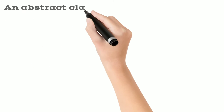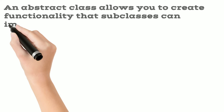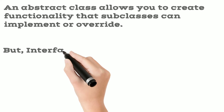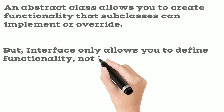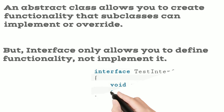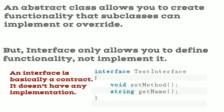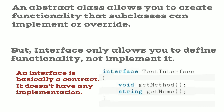An abstract class allows you to create functionality that subclasses can implement or override. But an interface only allows you to define functionality, not implement it. An interface is basically a contract — it doesn't have any implementation.